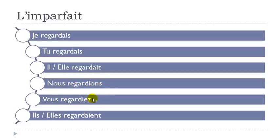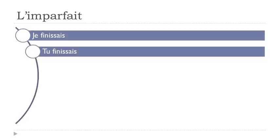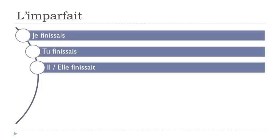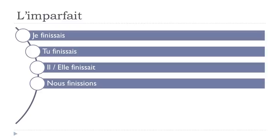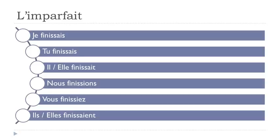For 'finir': je finissais, tu finissais, il finissait, elle finissait, nous finissions, vous finissiez, ils finissaient, elles finissaient. Same pattern: finissais, finissais, finissait, finissait all pronounced the same phonetically, then finissions and finissiez.